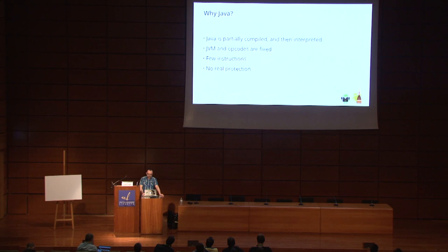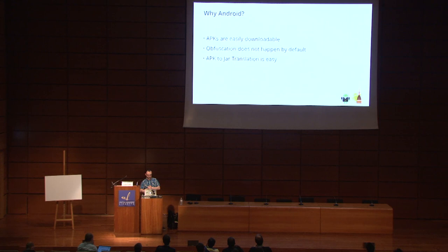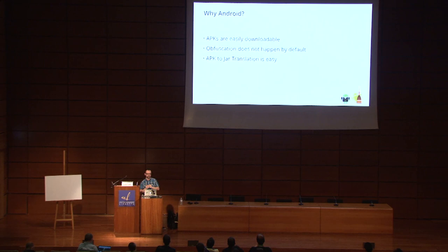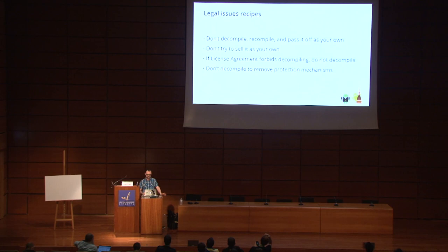Not only Android but also Java applications in general are vulnerable. In one of the demos I will show you how we can very easily decompile a Java file and open it. Why Android specifically? Because it's very easy to decompile Android. We can download APKs very easily from any source on the internet. Obfuscation is not always happening by default — we need to activate our ProGuard file or DexGuard if using another platform. And the translation from APK into a JAR file is extremely easy.